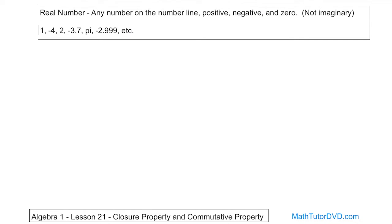So the first thing we need to talk about is this idea of a real number. Basically I've written it right here. Any number on the number line. But basically it's the numbers that go positive off to the right and then also go negative off to the left. Any number on the number line. Positive, negative, and zero.